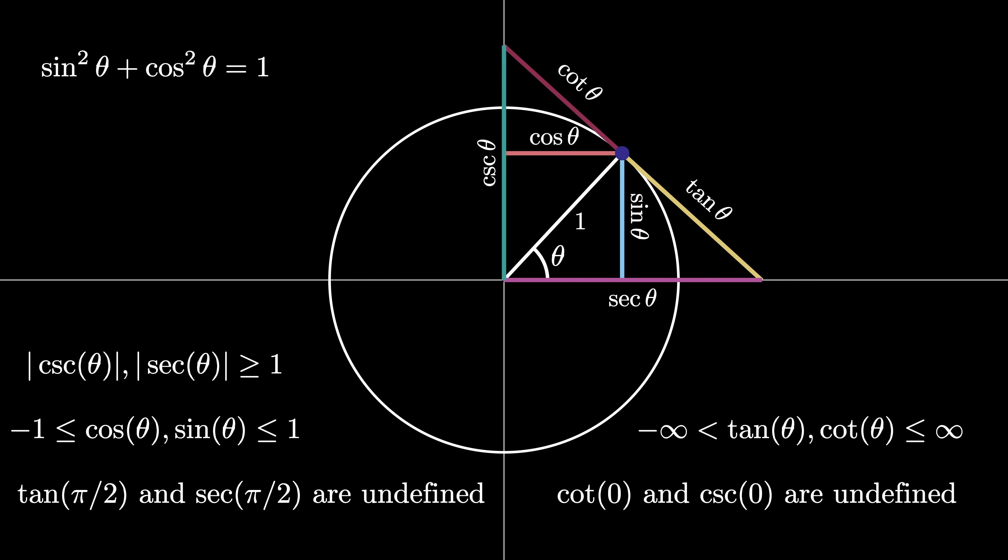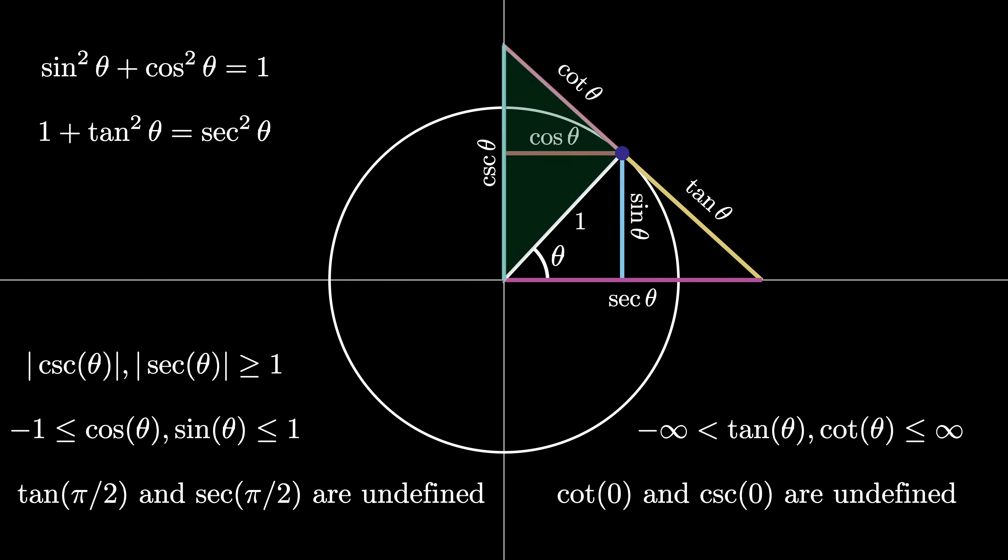From the right triangle created by the tangent and secant values, we get that 1 plus the tangent squared of theta must equal the secant squared of theta. And from the right triangle from the cotangent and cosecant values, we see that 1 plus the cotangent squared of theta equals cosecant squared of theta. It's interesting to note that all three of these identities are really just the same since they all come from triangle similarity.